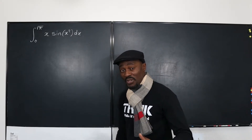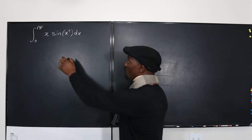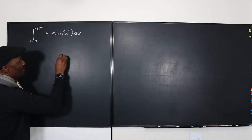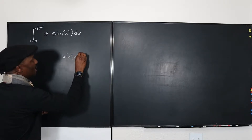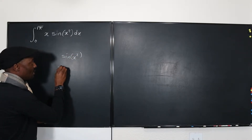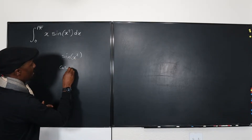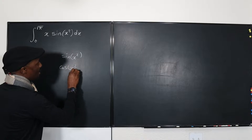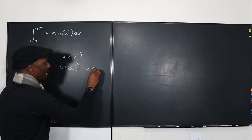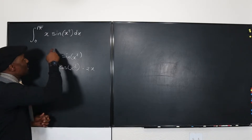What you're looking for is a derivative of one function that contains the other. Let's take the derivative of sine x squared. We apply the chain rule: the derivative of the outside gives cosine x squared, multiplied by the derivative of the inside, which is 2x. Now you can see that 2x contains x, which is the other function here.